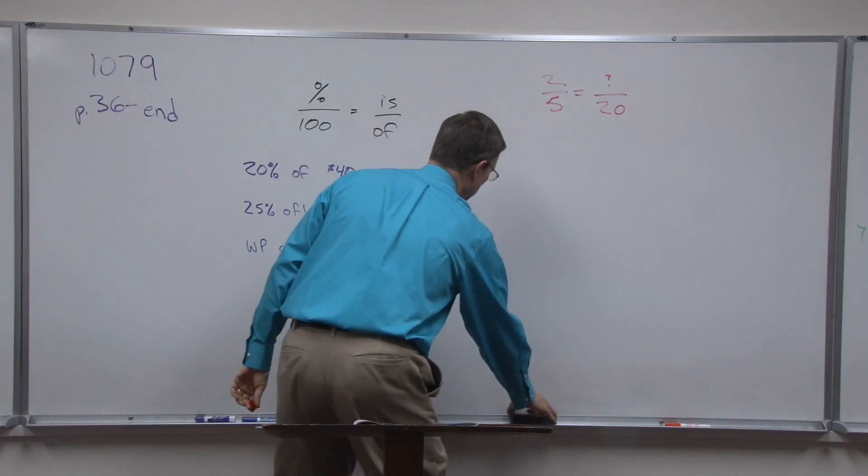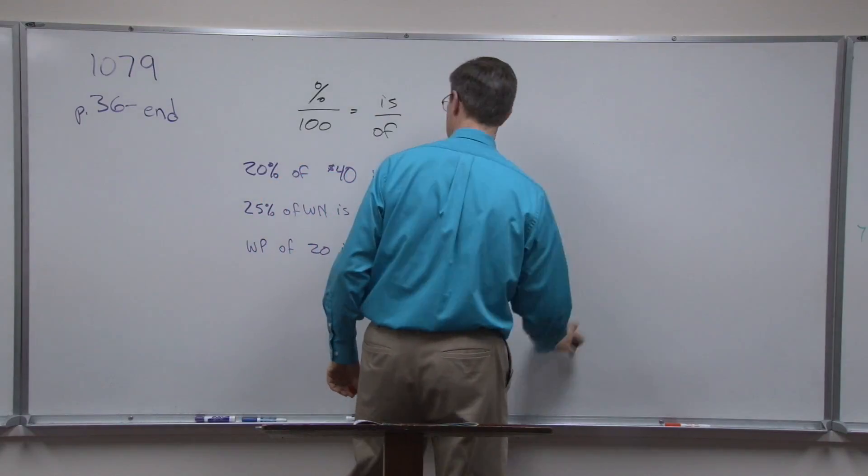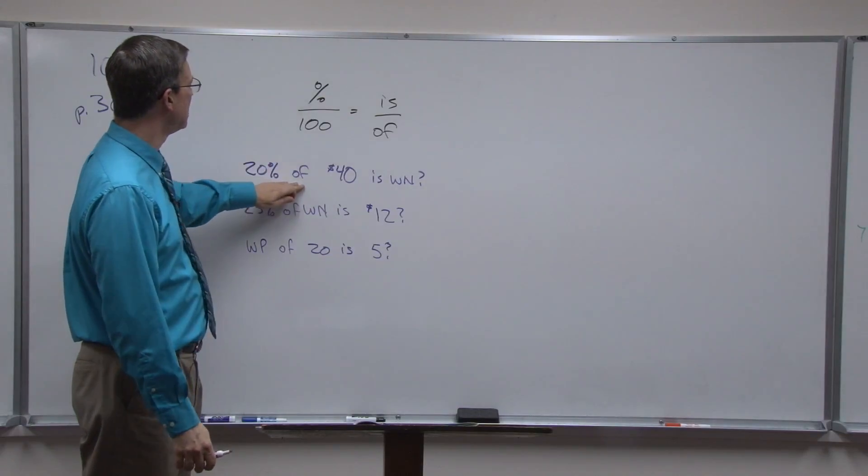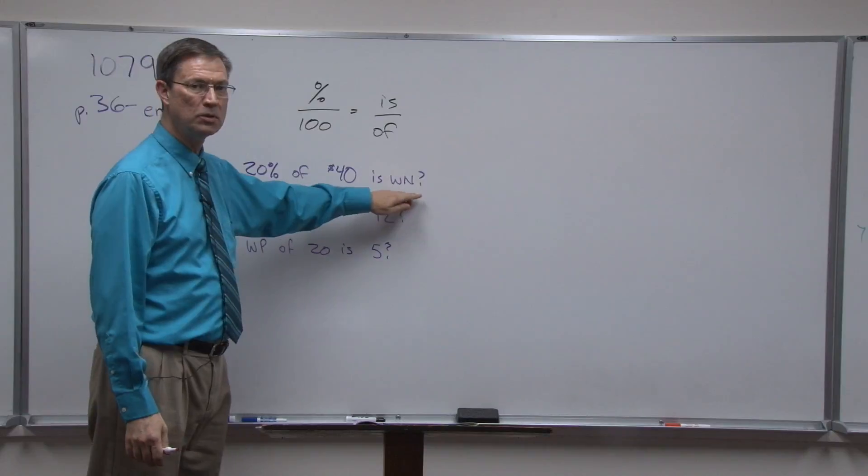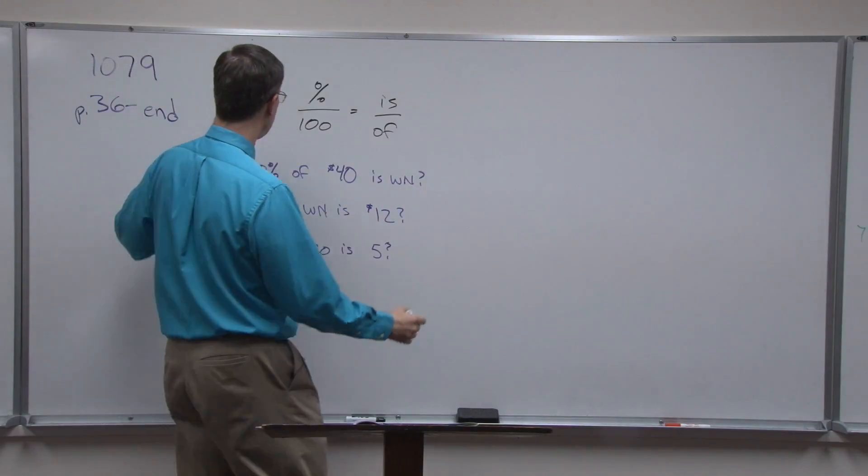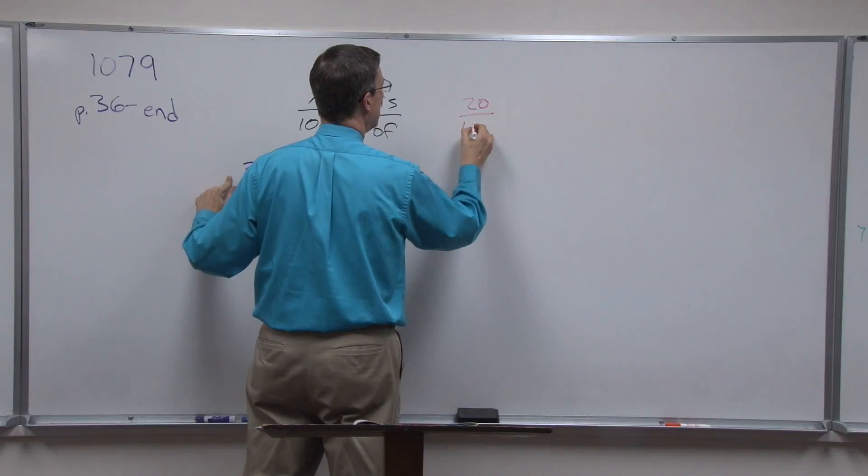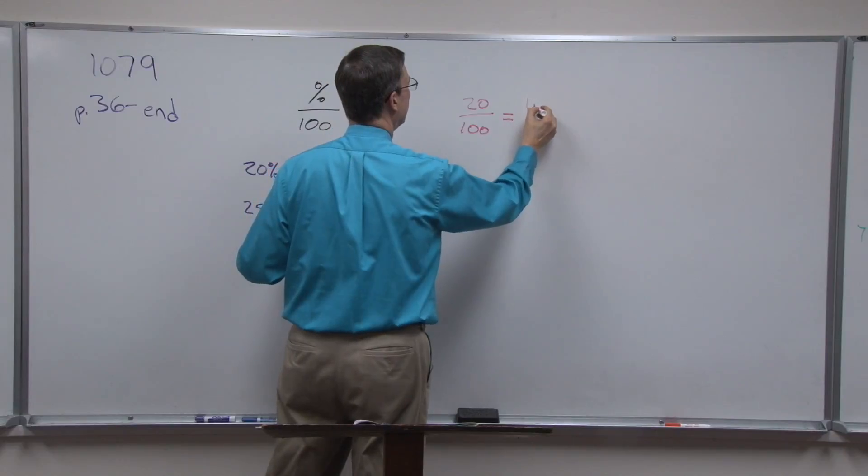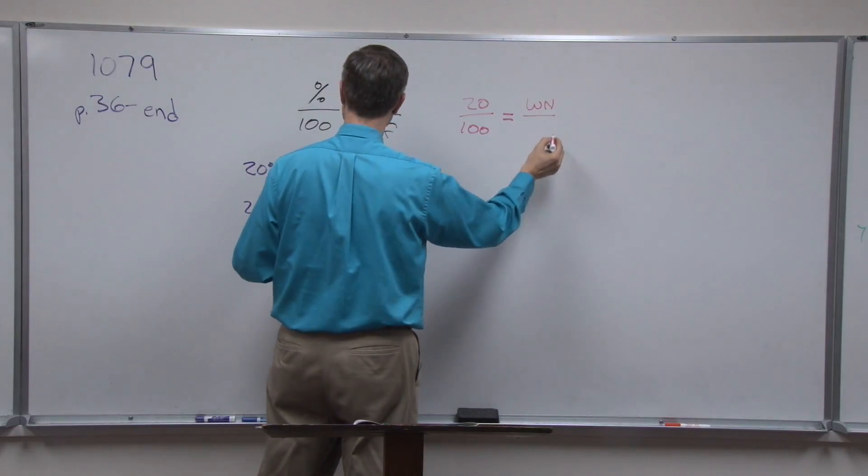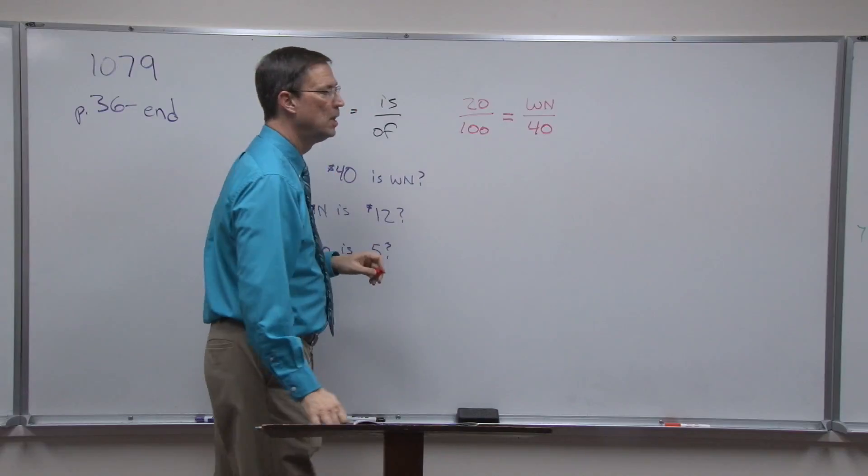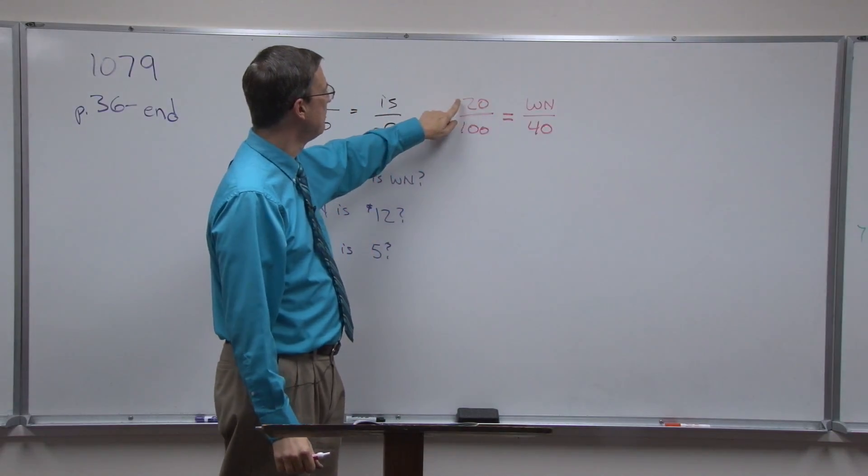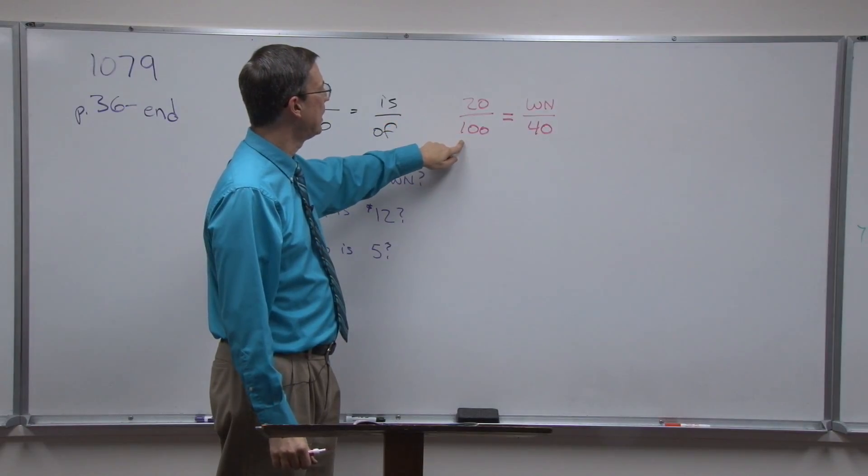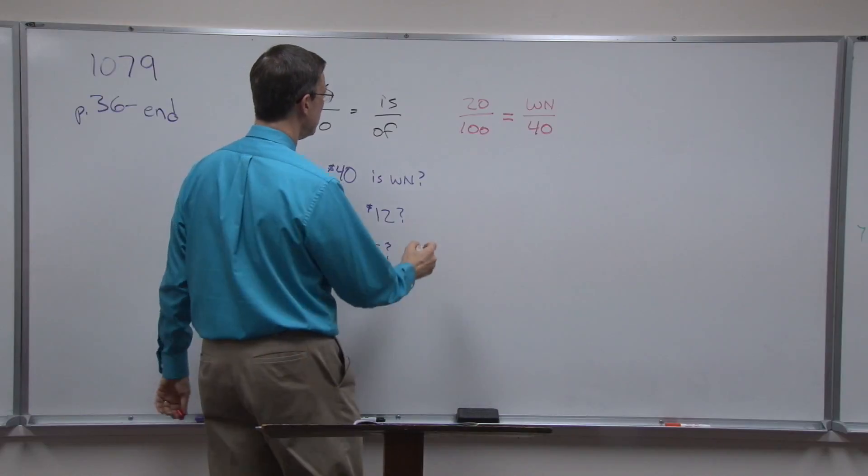So we can just sometimes really quickly do it in our head. Two times 20 is 40, 40 divided by five is eight. Now I want you to see how we do that with a percent problem. So here's a story problem: 20 percent of 40 dollars is what number. So I always leave the 100 on the bottom, put 20 over 100 equals is, that's what we don't know, over the of, the 40. Now we're going to cross multiply. 40 times 20 is 800, 800 divided by 100 is 8. So the answer for that one is 8.